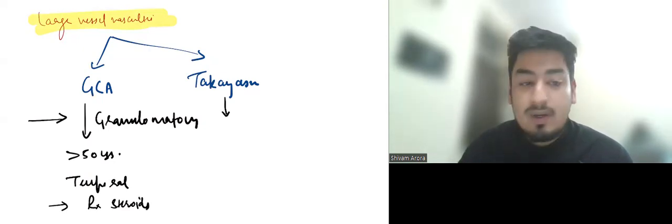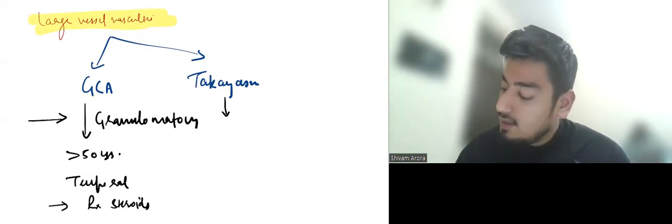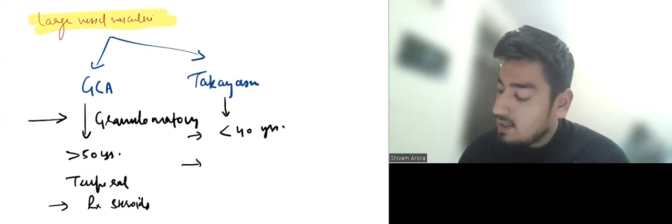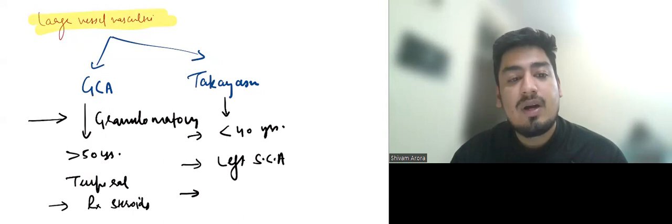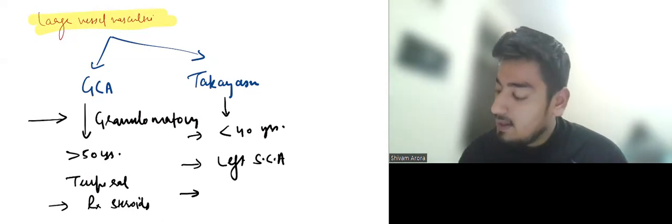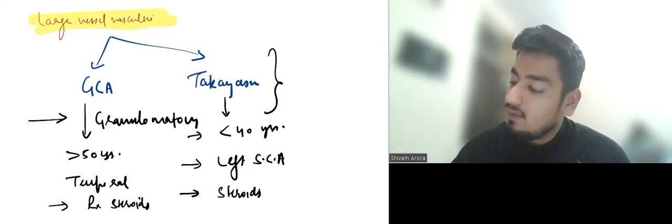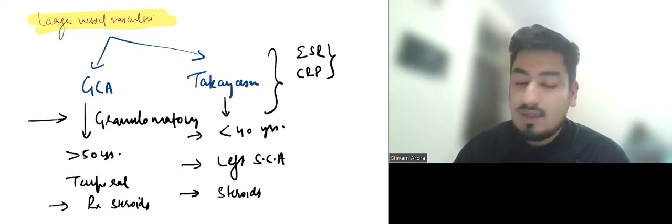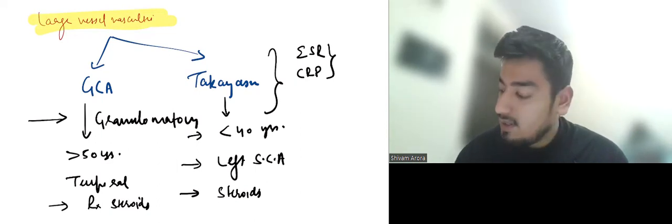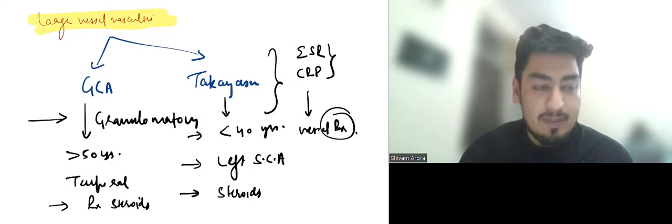In Takayasu arteritis again presents mostly below the age of 40 years, most common artery involved is left subclavian artery, most common symptoms are claudication upper limb and lower limb and treatment is steroids. For diagnosis we use inflammatory markers ESR and CRP followed by vessel biopsy.